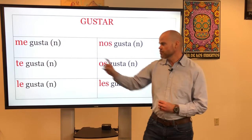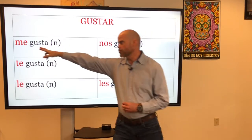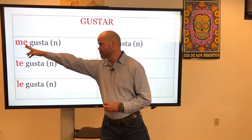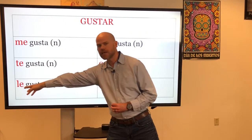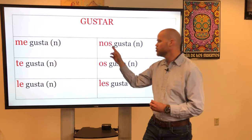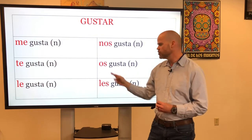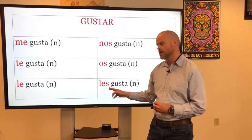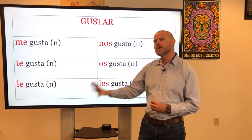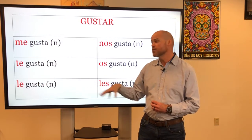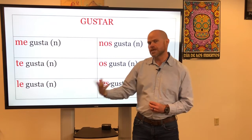What does change are the pronouns. So we have me, te, le, nos, os, and les. These are indirect object pronouns, and they indicate who is doing the liking.